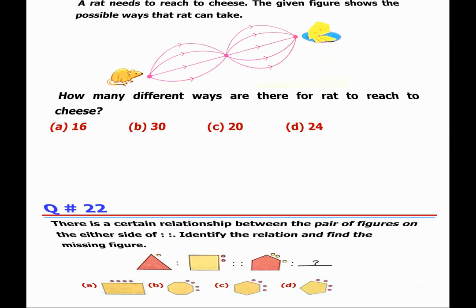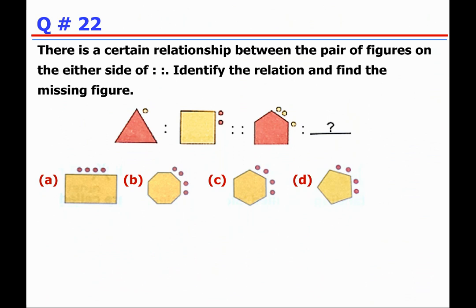Next, Question 22: there is a certain relationship between the pair of figures on either side of the 'as is to' (proportional/double colon). Identify the relation and find the missing figure. Here we have a triangle and a circle — as is to — then a square. A triangle has three sides, and it becomes a square which has four sides. So the number of sides increases by one.